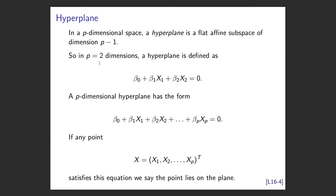For example, if p equals two dimensions, the hyperplane is beta 0 plus beta 1 x1 plus beta 2 x2 equals 0. You could rearrange that into a standard line. The key thing is this line doesn't necessarily go through the origin — the beta zero makes it affine. In a p-dimensional hyperplane, it's just a linear combination of all the predictors. Because it equals zero, we have a linear constraint, so it has dimensionality p minus 1.